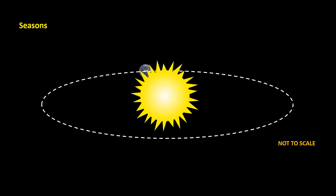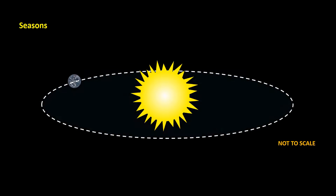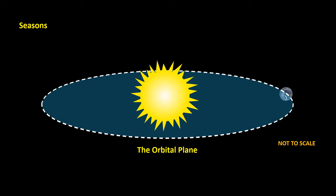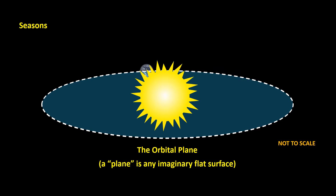We know that the Earth orbits the Sun. The imaginary flat surface that the Earth is on is called the orbital plane. A plane is any imaginary flat surface.